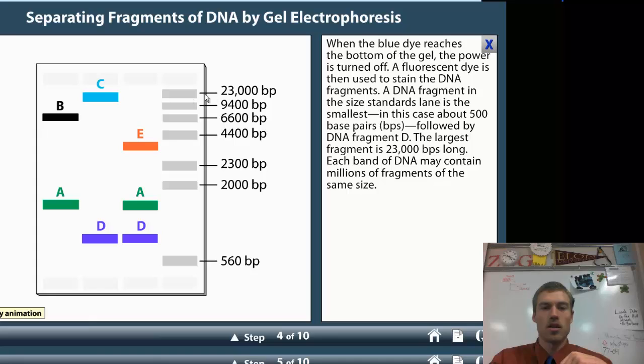Notice that the larger size is up here next to the wells where we started, and then the smallest is farther away. And what we can do is we can then stain the DNA so that we can see where the bands are. We'll be using a blue stain when we do this lab in order to see them.